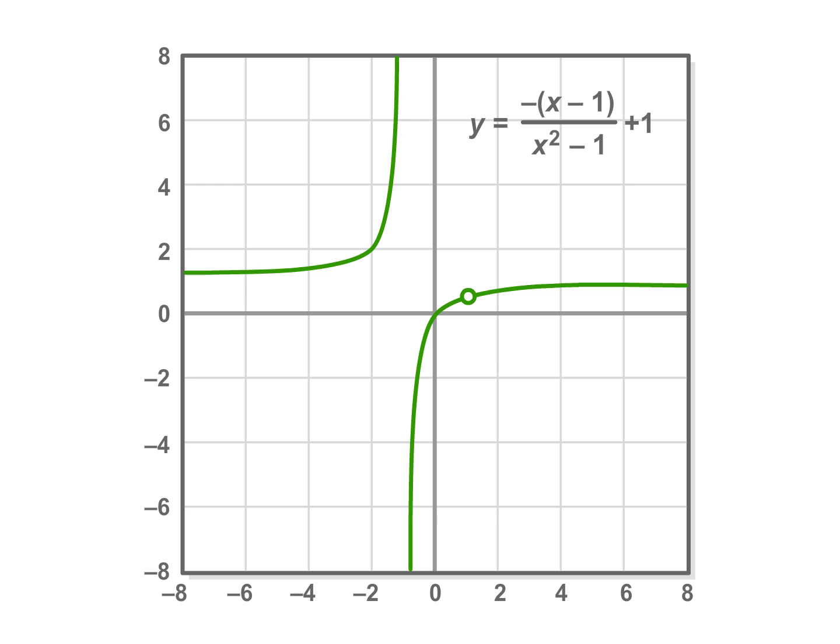Sometimes the graph of an equation or function has a small hole as a result of possible division by zero. Some graphs will approach but never touch a given line called an asymptote. These are important features that must be included with the graph.